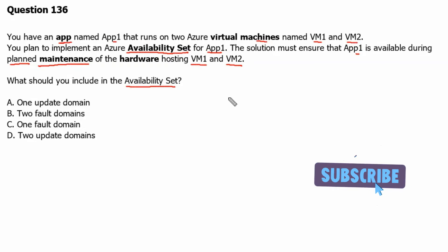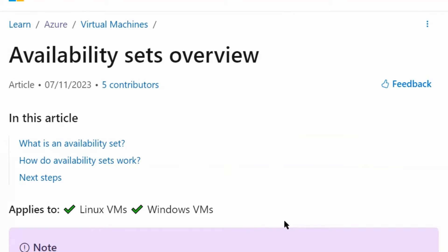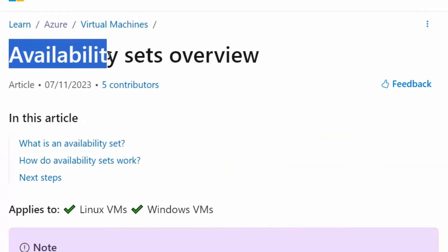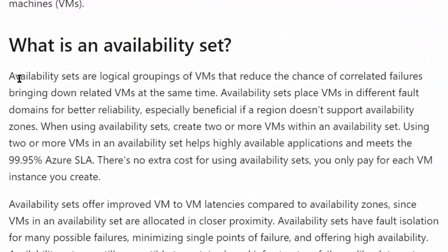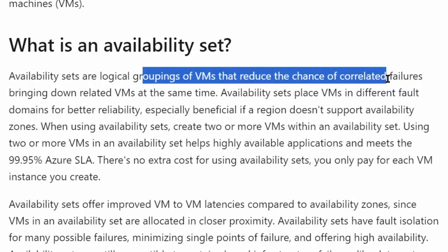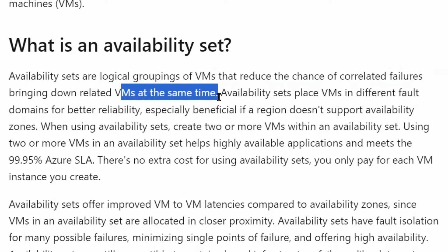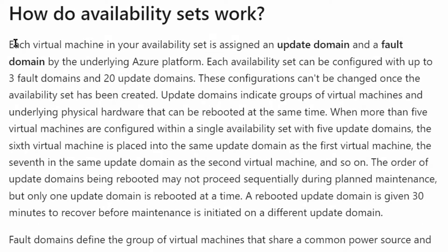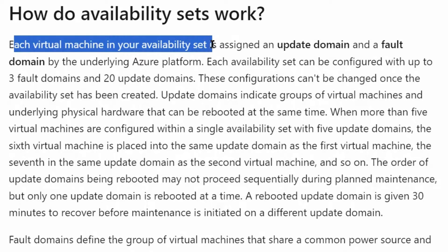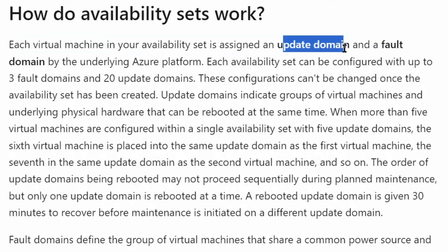To understand it better, let's go to the Microsoft documentation portal. We are on the availability set overview page. An availability set is a logical grouping of virtual machines that reduces the chance of correlated failure, bringing down related VMs at the same time. Each virtual machine in your availability set is assigned an update domain and a fault domain.